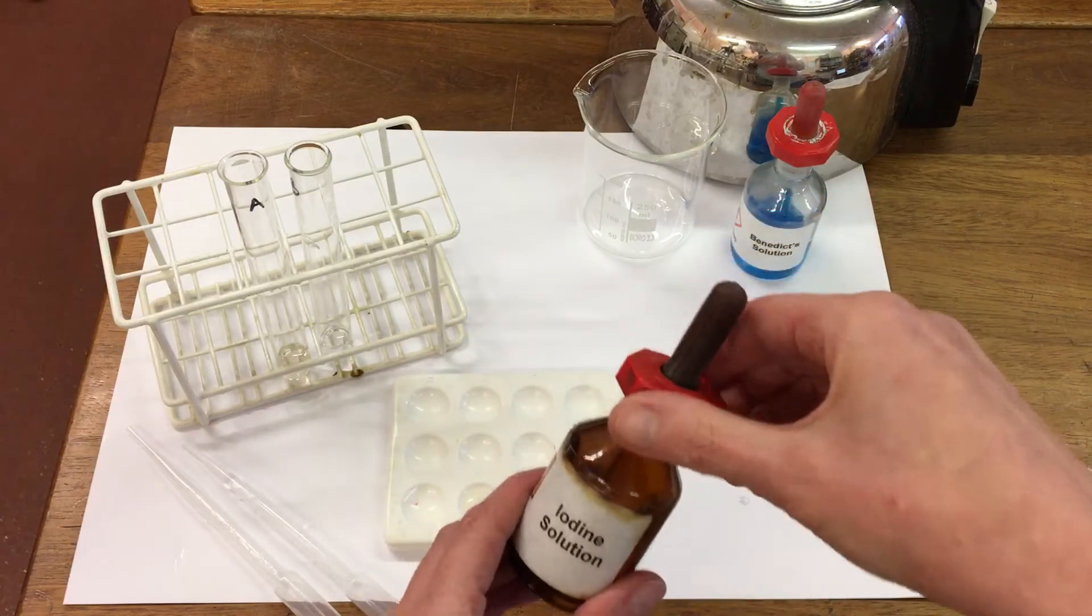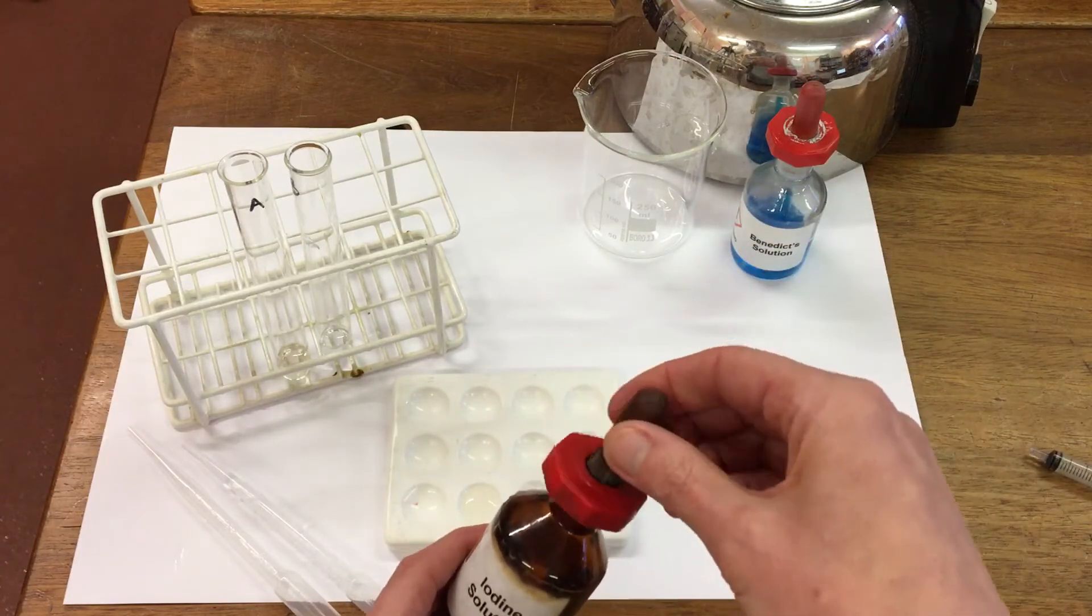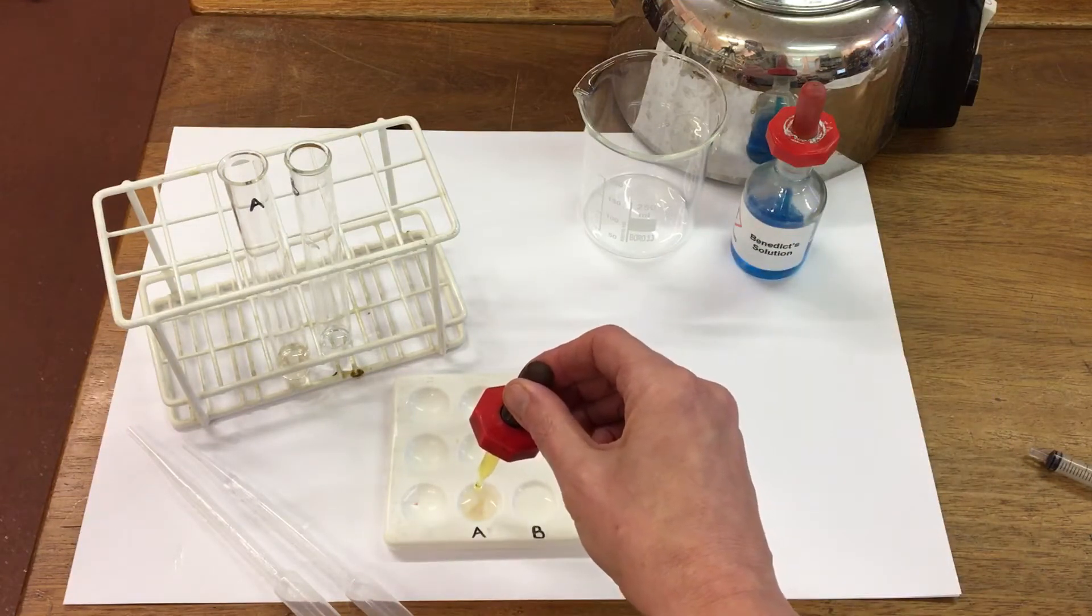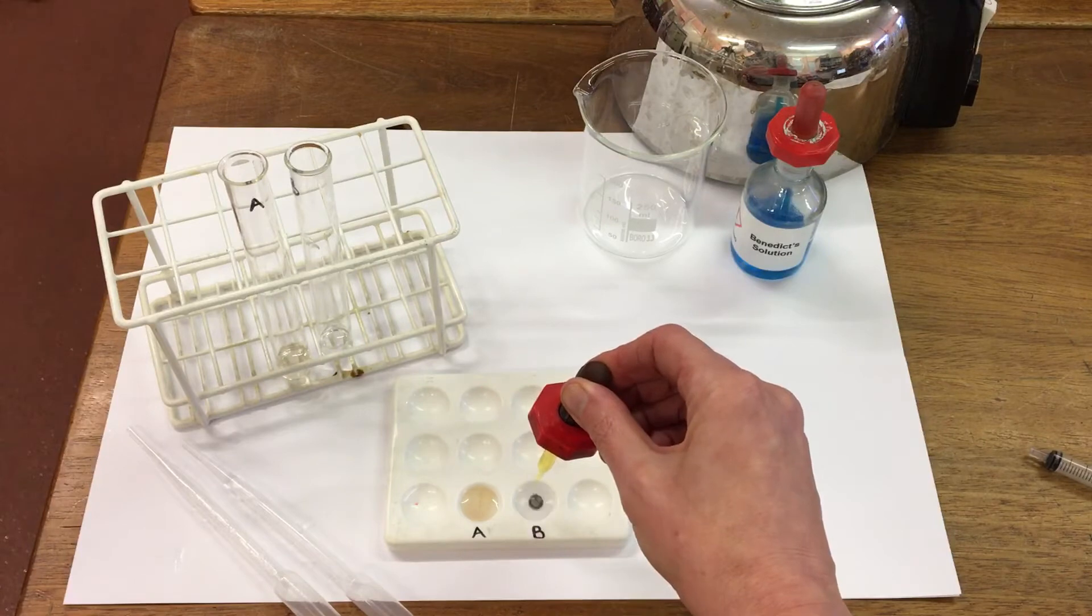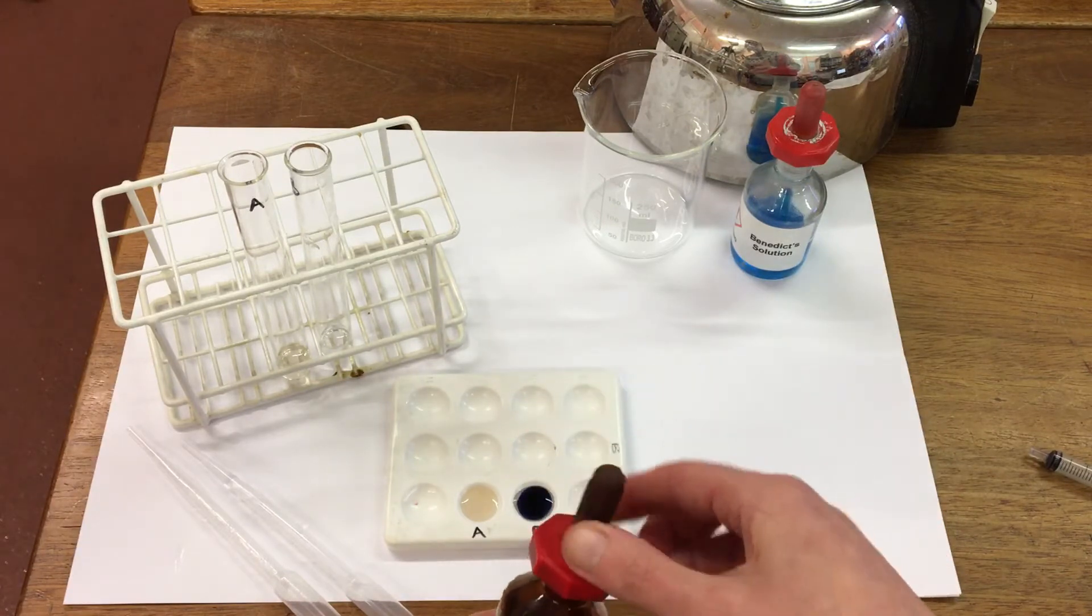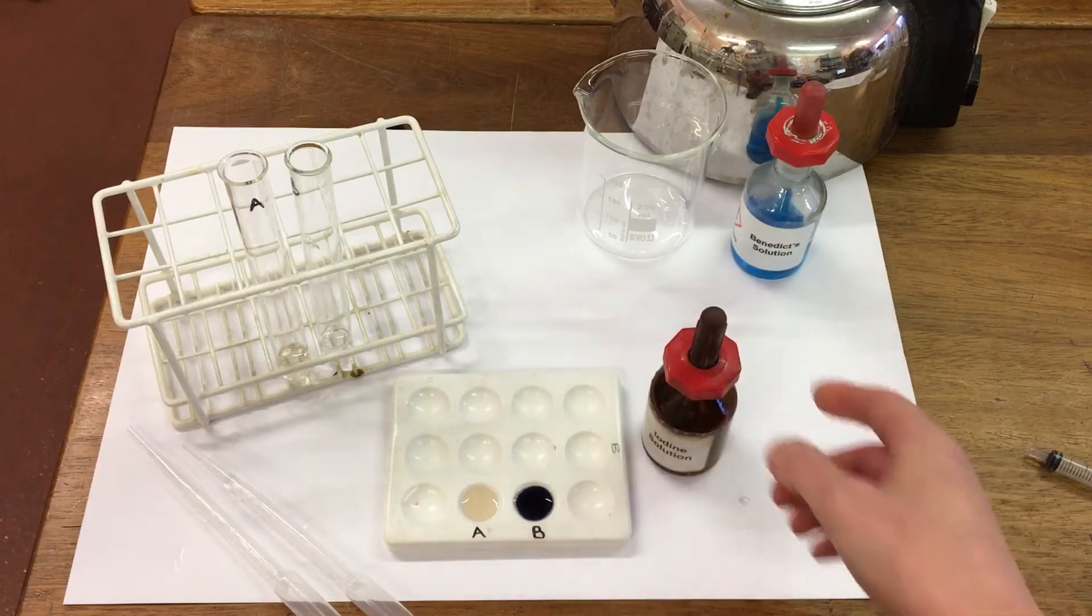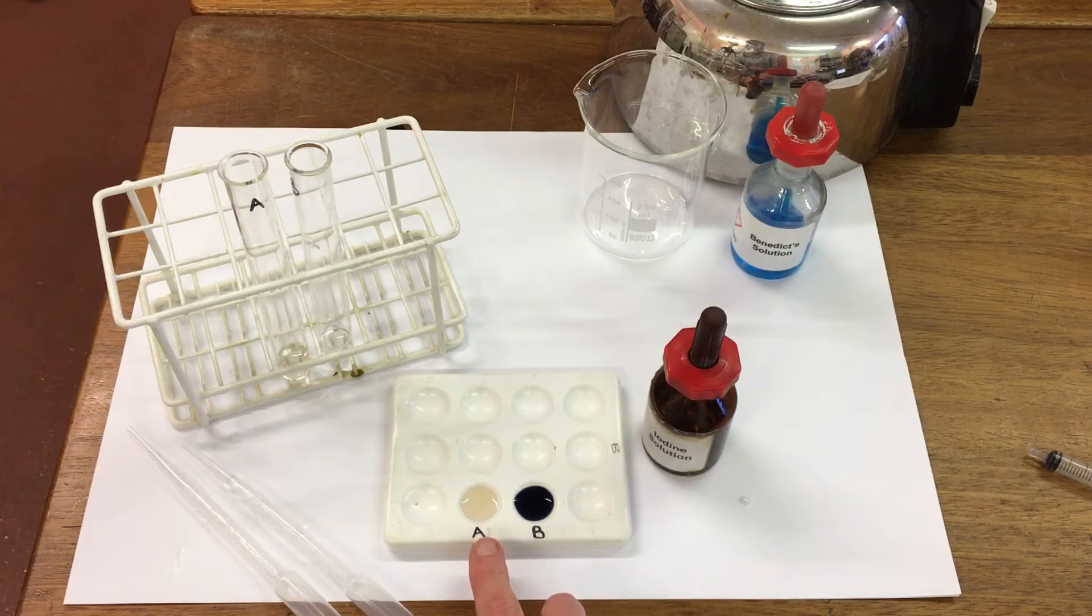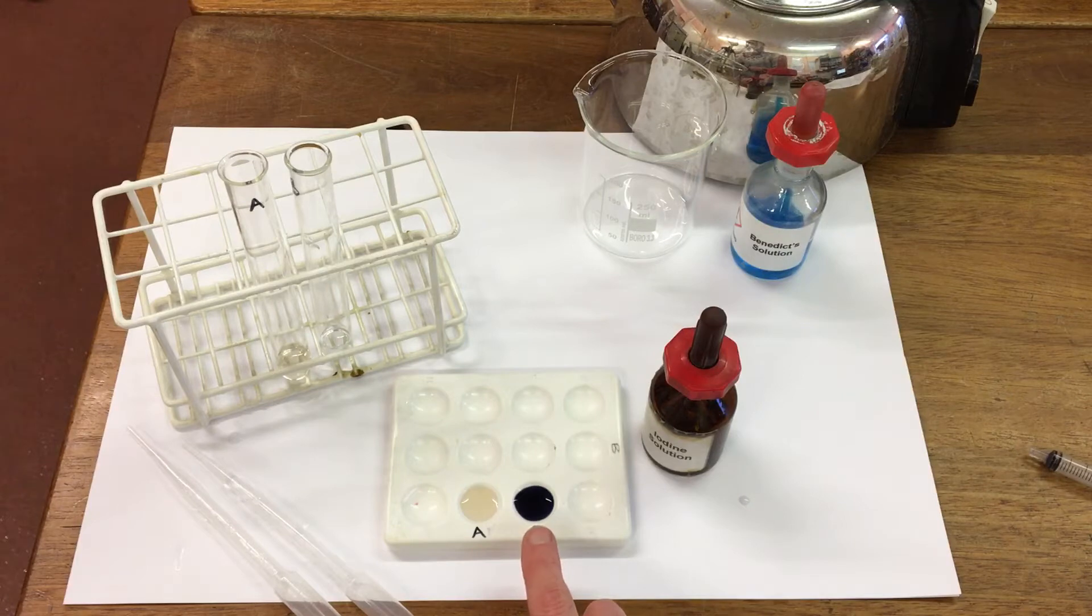Using the iodine, we can see for A there's no color change, so all the starch is gone. And in B, the iodine has gone blue-black color. So this is a positive test for starch.